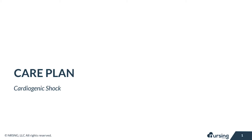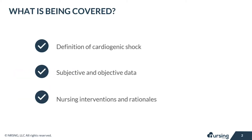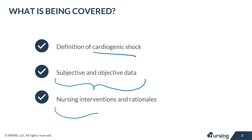In this lesson, we're going to take a look at the care plan for cardiogenic shock. We'll briefly cover the pathophysiology and etiology, as well as subjective and objective data that your patient may present with, and nursing interventions and rationales for this issue.